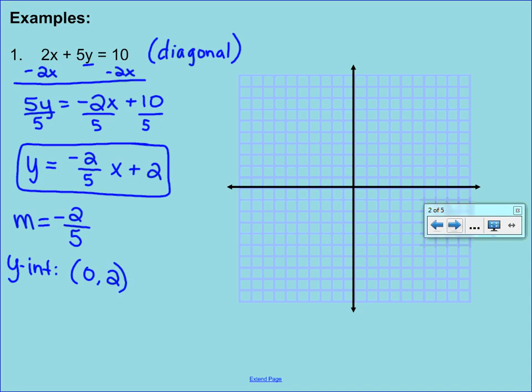So now this is the new step here. We have to graph this. First, graph your y-intercept. We just found out that our y-intercept was a 0 and a 2, so make sure you're on the y-axis and plot 2.